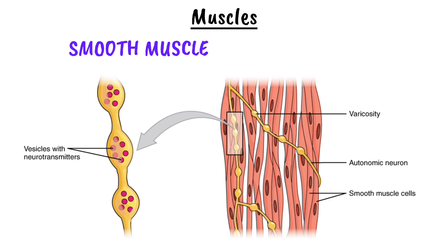This alternating contraction of the two layers produces peristalsis, a wave-like movement that propels contents through the organ. Like cardiac muscle, smooth muscle is regulated by the autonomic nervous system and functions automatically.